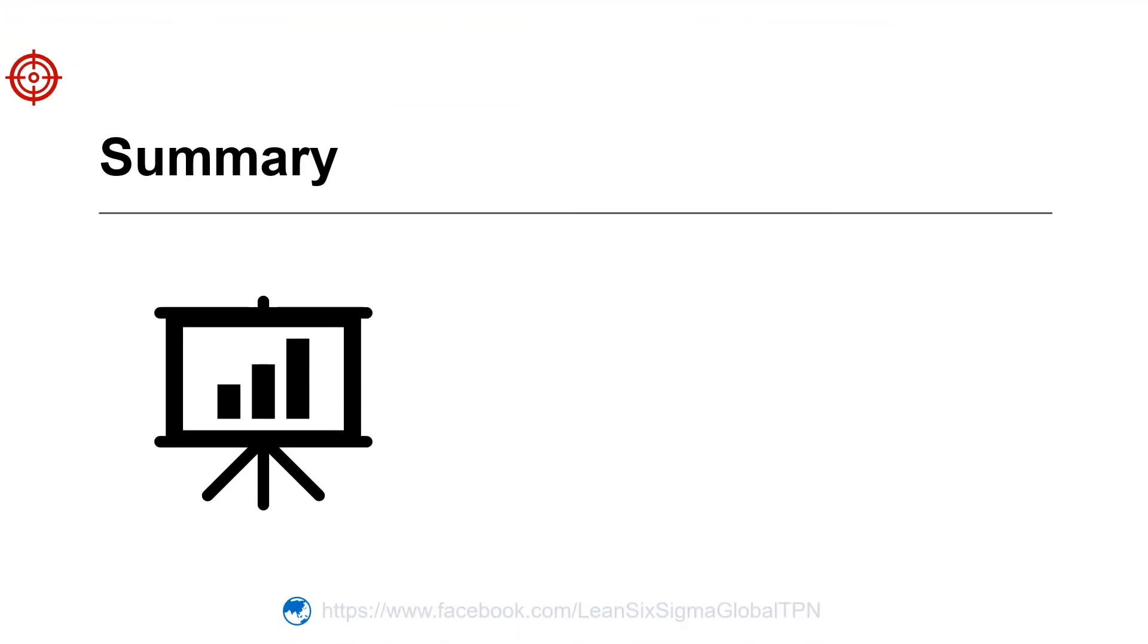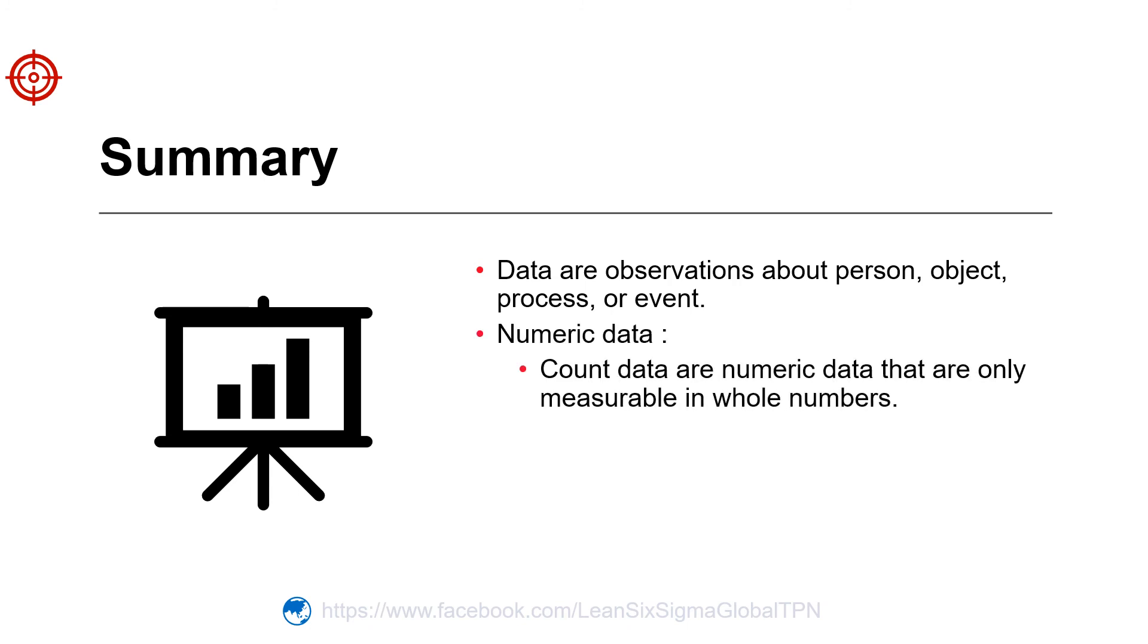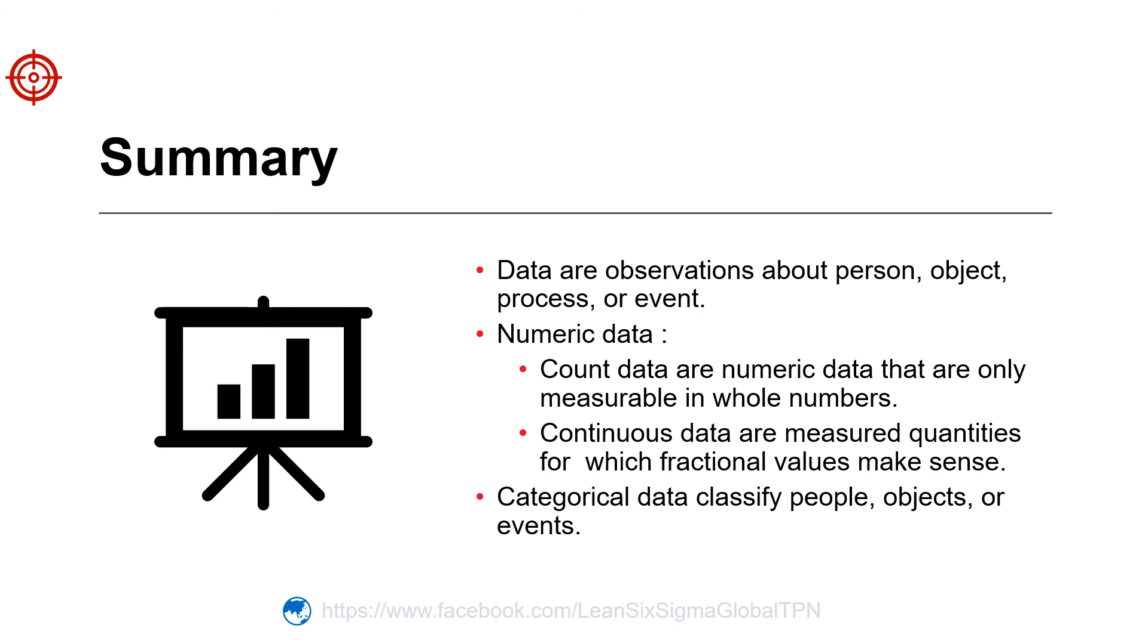Let's review. Remember that data are factual observations gathered about a process or event. Numeric data come in two types: count and continuous. Count data are numeric data that are only measurable in whole numbers. Continuous data are data for which fractional values make sense. And categorical data classify people, objects, or events.